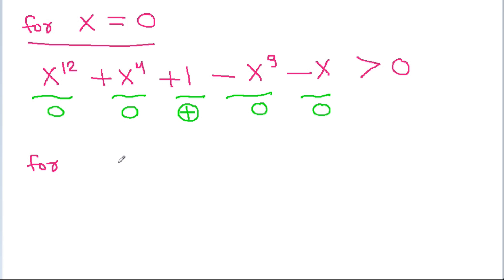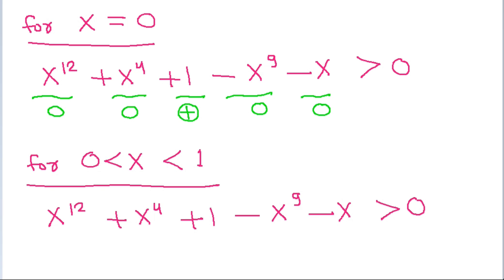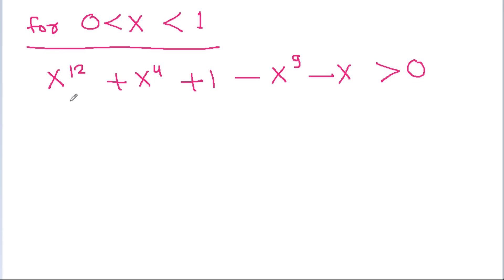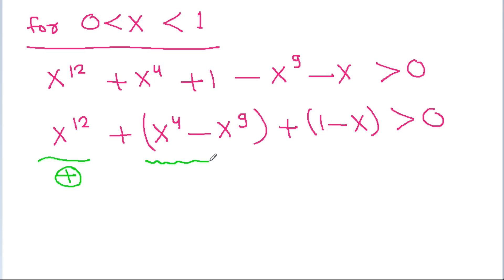If we check for x between 0 and 1, we consider x power 12 plus x power 4 plus 1 minus x power 9 minus x greater than 0. For 0 less than x less than 1, x power 4 will be greater than x power 9, so that part is positive. Also, 1 minus x is positive since x is less than 1. So for x between 0 and 1, the expression is positive.